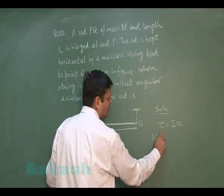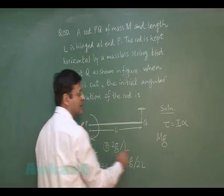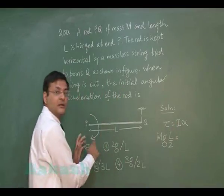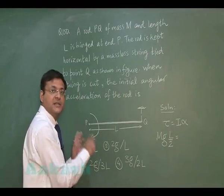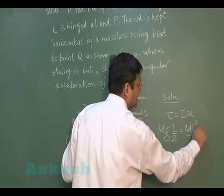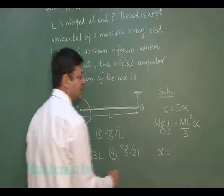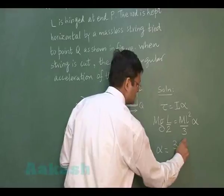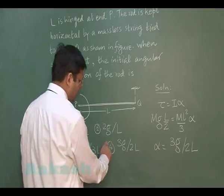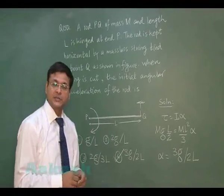The torque is applied by the weight — force Mg with perpendicular distance l/2 from the hinge. This equals the moment of inertia of the rod about one end, which is Ml²/3, multiplied by α. Solving, α = 3g/2l. The most appropriate answer is the fourth option.